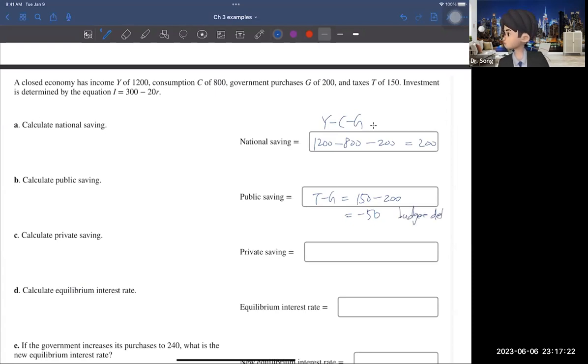Because public saving is negative. That means that this government faces a budget deficit. So they spend more than their income. So that is a budget deficit.